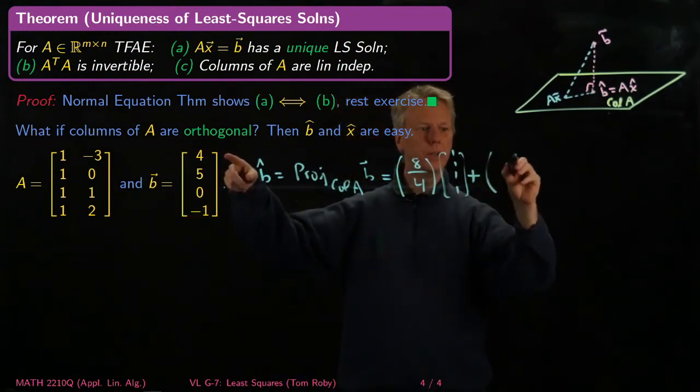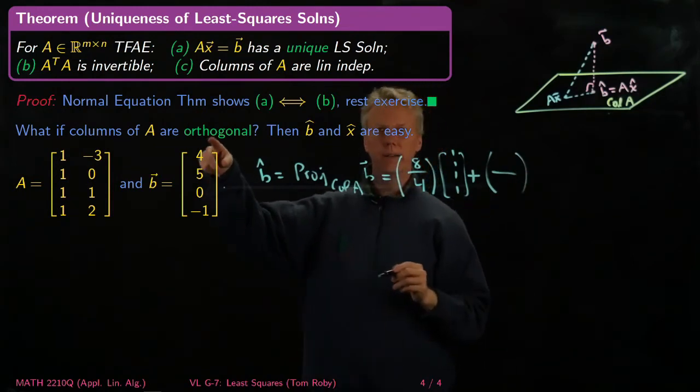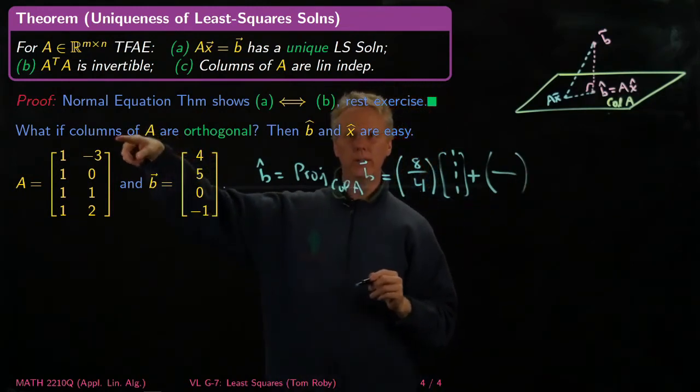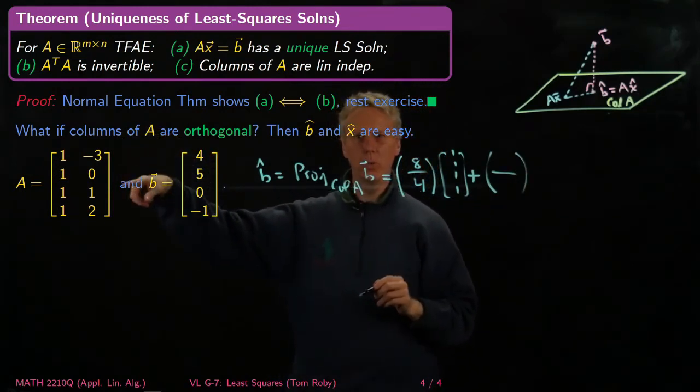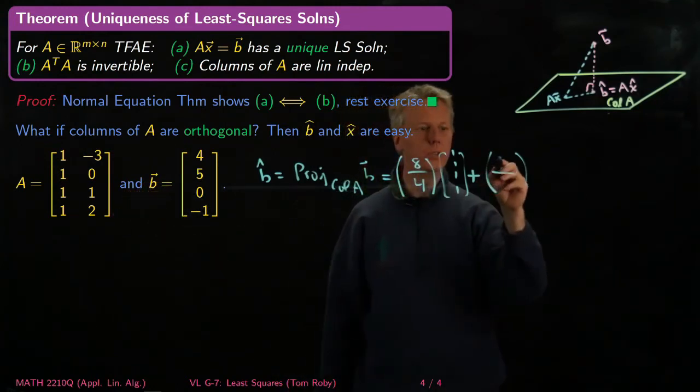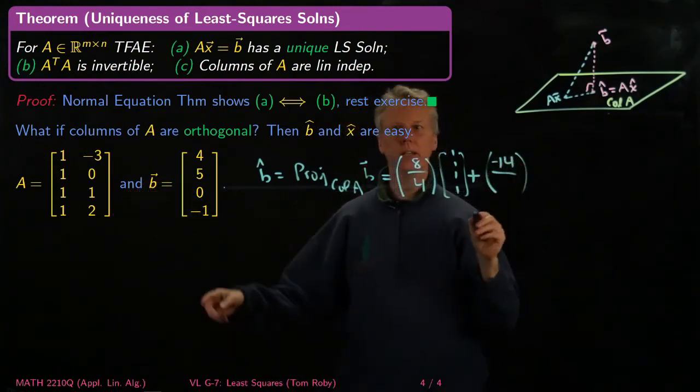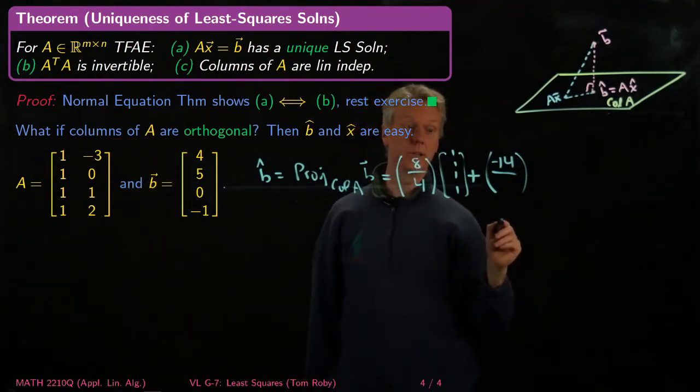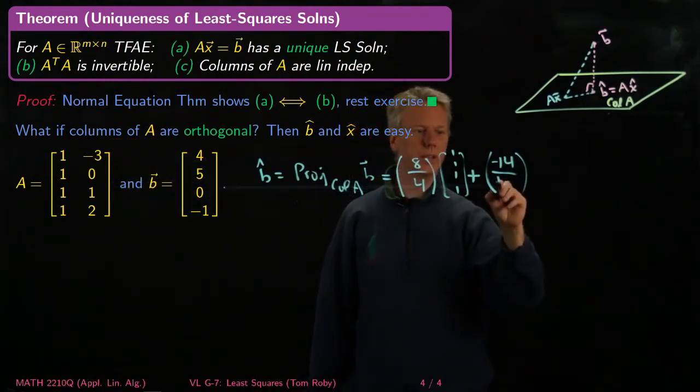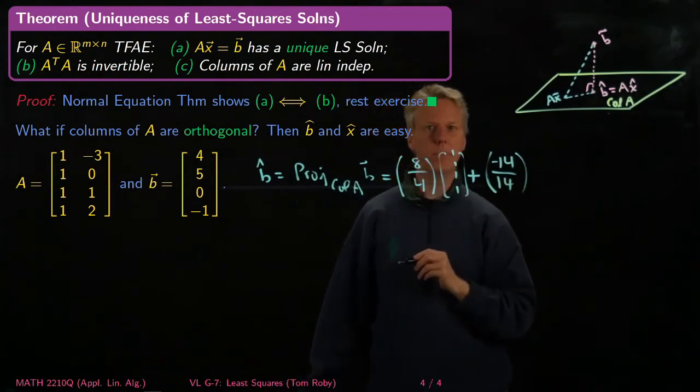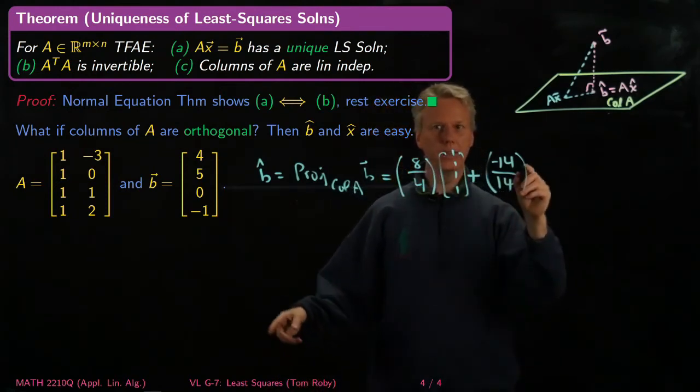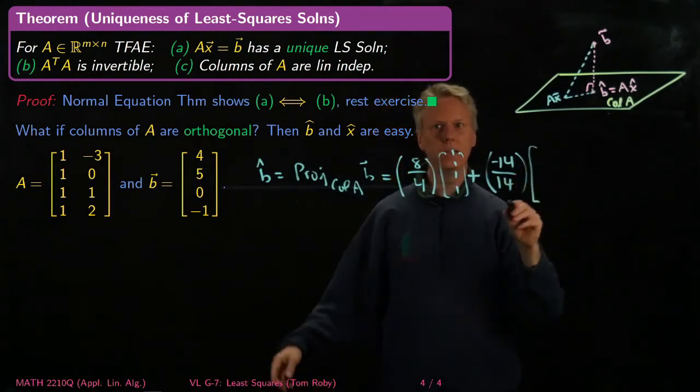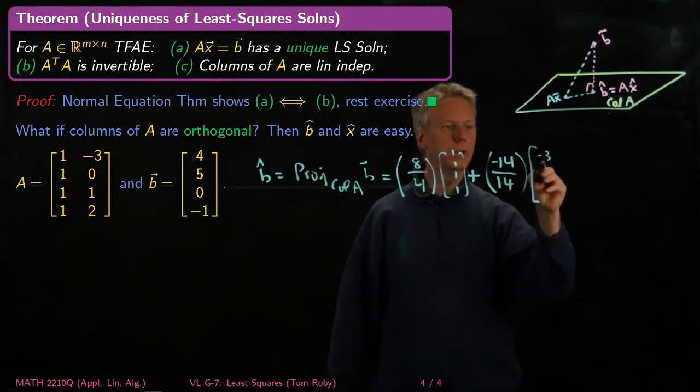And now what happens in the second one? I take this ratio of dot products. I take B and I dot it with this vector. So I get -12 - 2, so I get -14 divided by the length of this vector, which is 9 + 1 + 4 is 14. Wow, it must be a made-up math teacher problem. And I multiply that by [-3, 0, 1, 2].